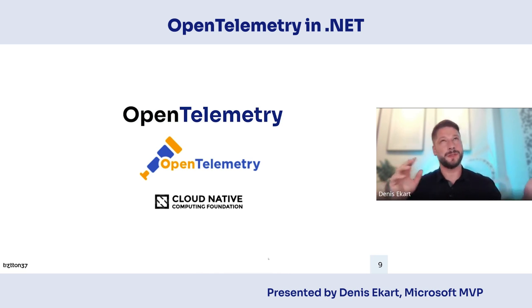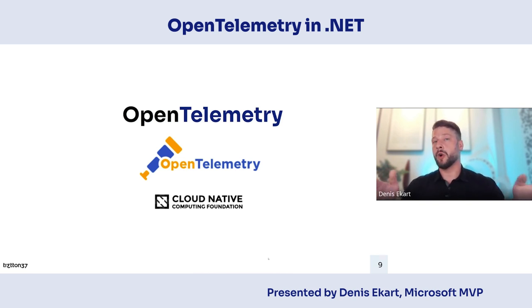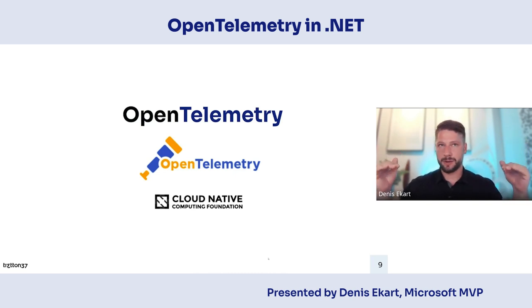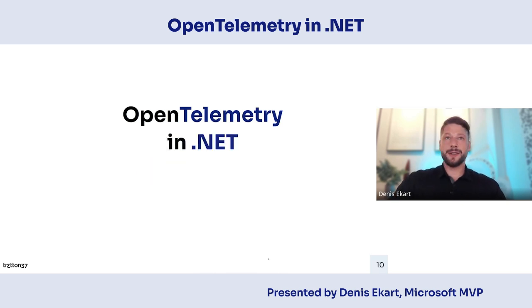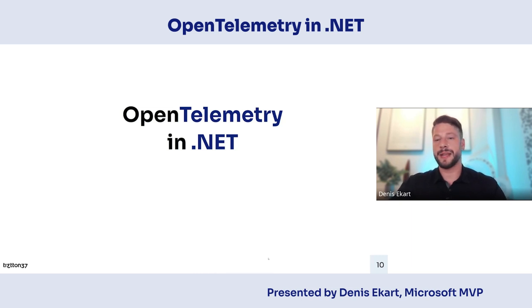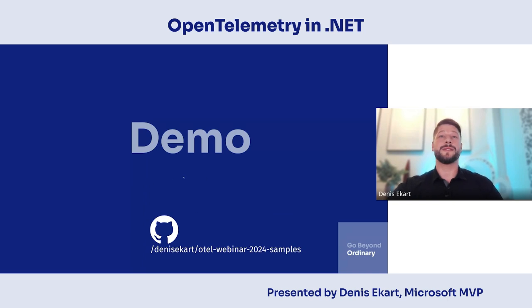The history of OpenTelemetry is a bit interesting. It's a Cloud Native Computing Foundation (CNCF) project — you may have heard of CNCF because it also houses Kubernetes. OpenTelemetry is the second most popular CNCF project. It actually came about from two different projects: OpenCensus and OpenTracing. Someone figured out they were doing similar things, so they merged them to create a standard everyone can use. That brings us to OpenTelemetry.NET. Rather than spending too much time on theory, let's go into the demo and have a look at what this gives us in .NET.